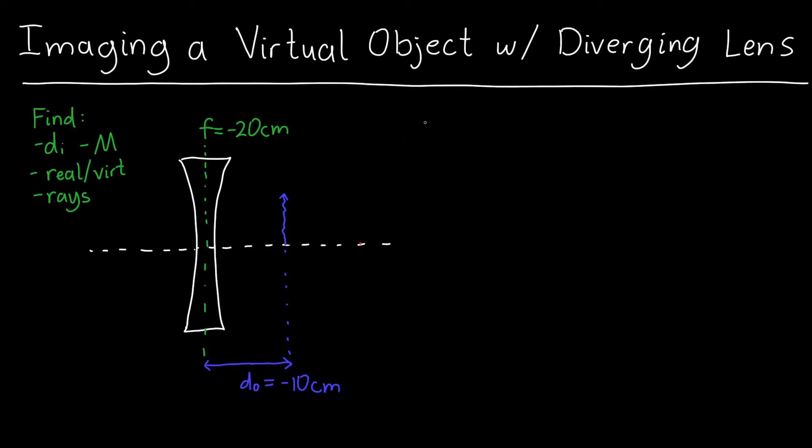First of all, you might be wondering what on earth is a virtual object? Well, a virtual object is just where an object would have formed if there's no lens here. So usually these happen in the context of multi-lens systems. So if I secretly have some lenses back in this direction off to the left, they might form an image at this location. And that image would become the new object for my diverging lens. And so it's totally possible that an object could be to the right of this lens.